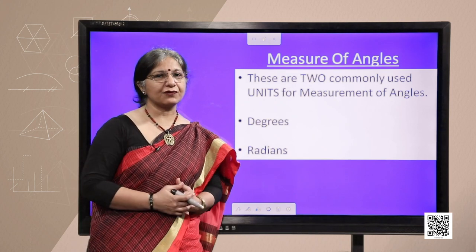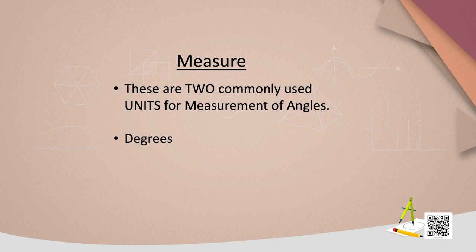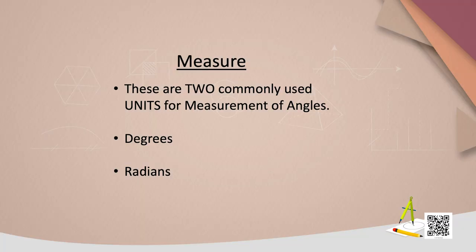Now for measuring any quantity, we need units and for measuring the angles also, there are two commonly used units of measurements of angles. Degree, you are familiar with it and other one is radian.